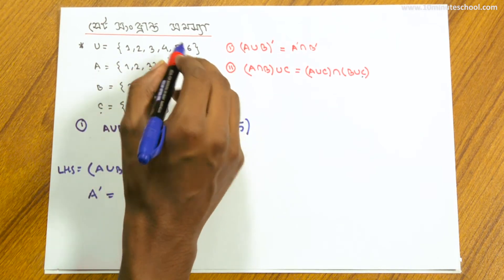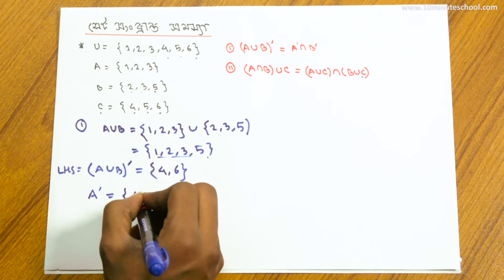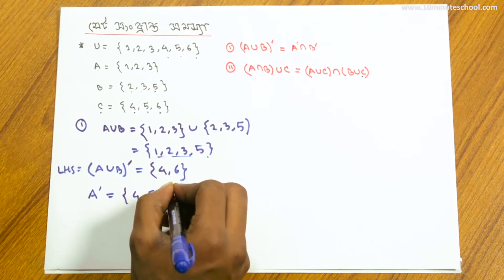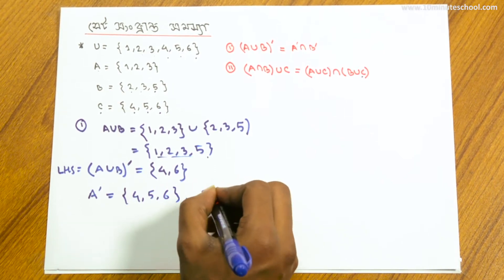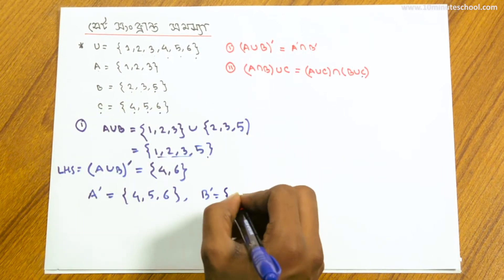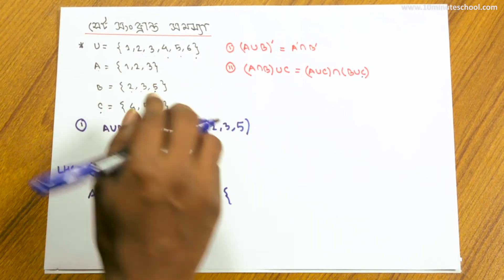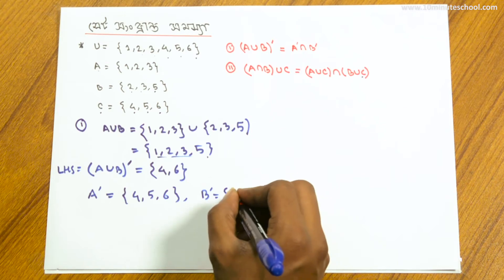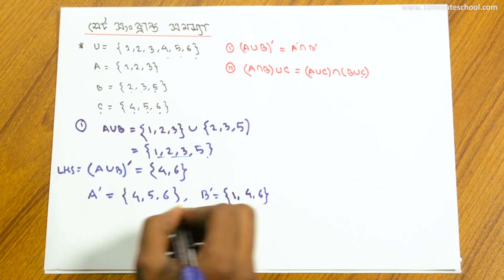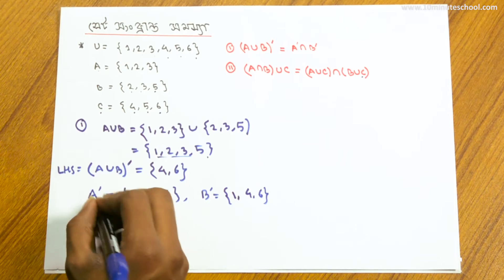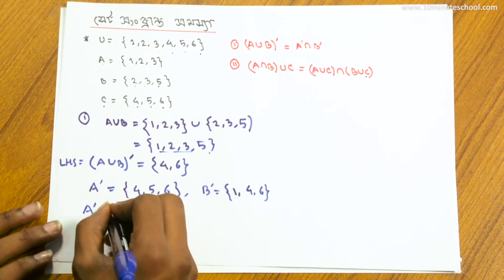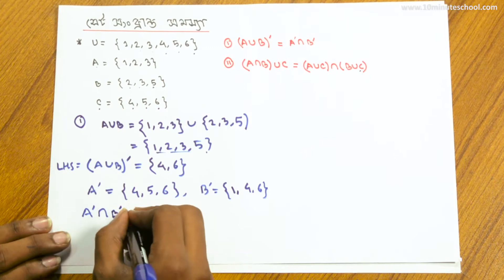Now A union C. A complement is {4, 5, 6} and B complement is {2, 3, 5}. So A prime intersect B prime gives us {1, 4, 6}. We are computing the right-hand side now.